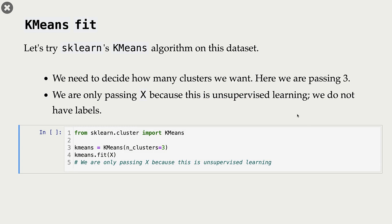First, we need to import K-means from sklearn.cluster. Next, we create a K-means object and pass how many clusters we want using the n_clusters parameter. Here we are telling it to create three clusters because we know that in our toy data set there are three clusters.